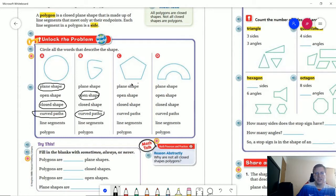So for part c we are working with a plane shape that is a closed shape that is made up of line segments and because it's all three of these things it is also a polygon.